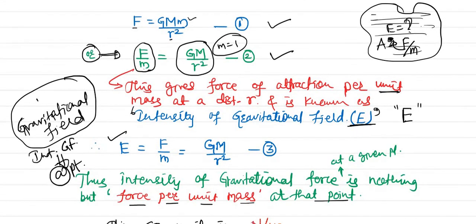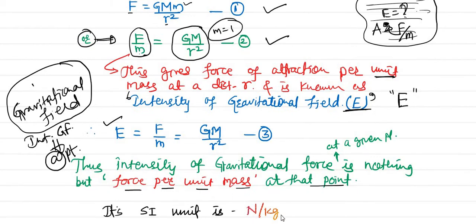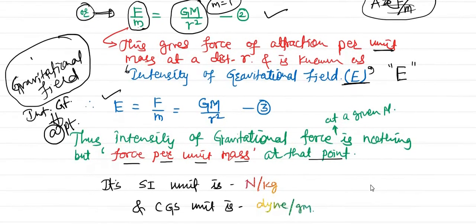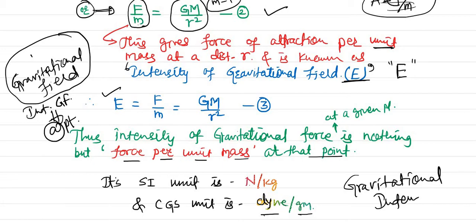Let us talk about its units. Since intensity is force per unit mass, in SI units force is in Newtons and mass is in kilograms, so the unit is Newton per kilogram. In CGS units, force is in dyne and mass is in gram, so the unit is dyne per gram. The intensity E is denoted by capital E.